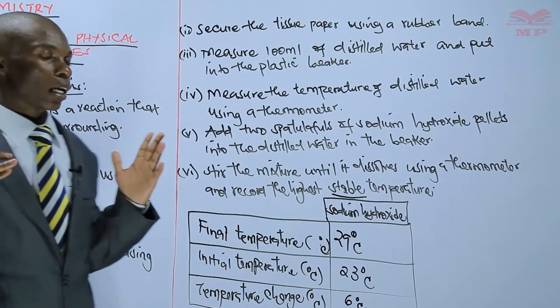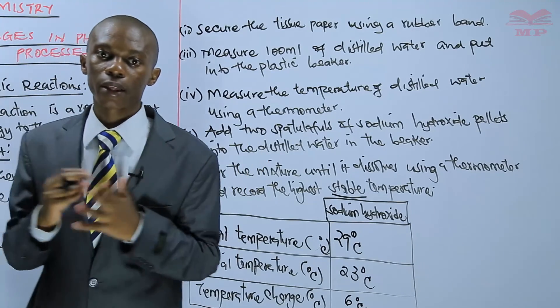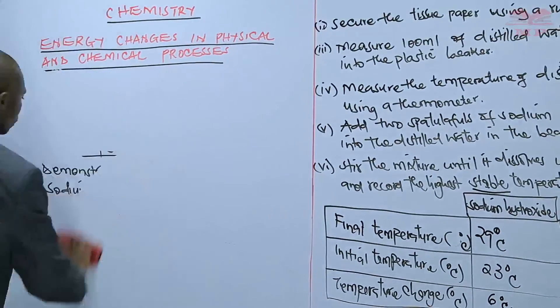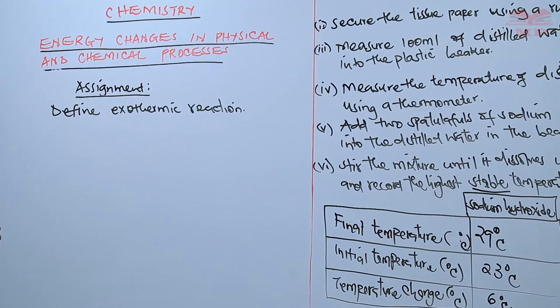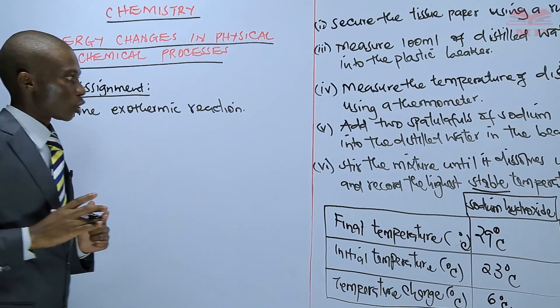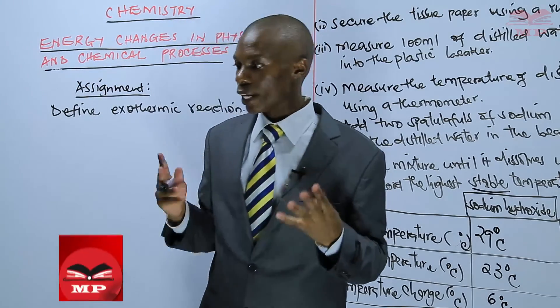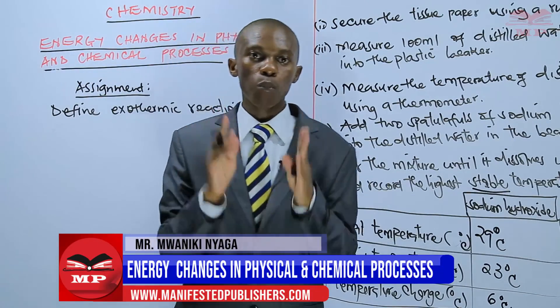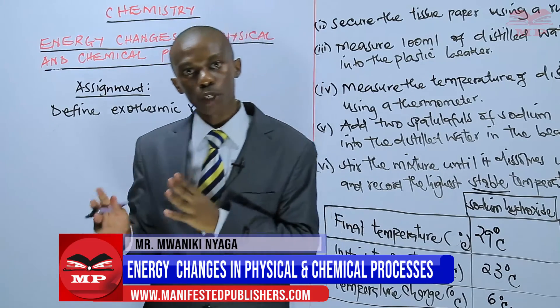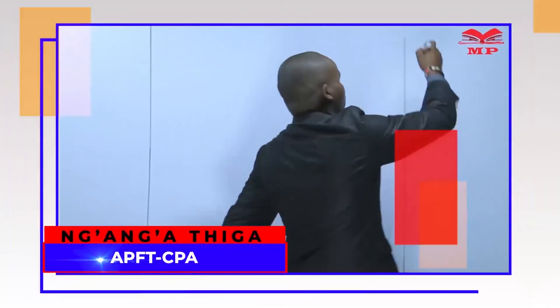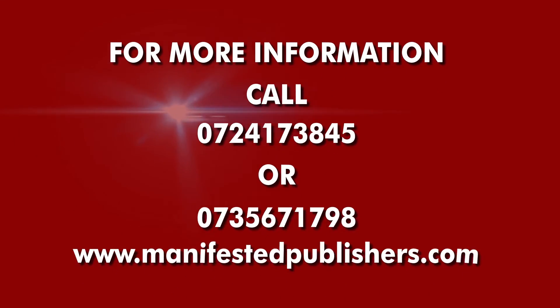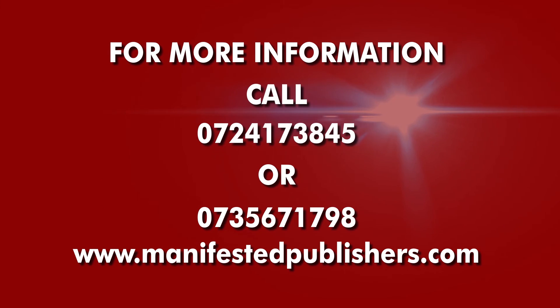So that is our lesson today. Your assignment is: define what an exothermic reaction is. That brings us to the end of our lesson. Our next lesson, we are going to talk about bond breaking and bond formation in chemical and physical processes. Thank you for choosing to study with us. For more information, you can call us on 0724-173845.